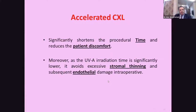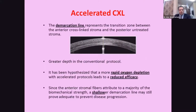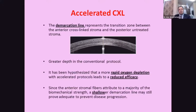Accelerated cross-linking significantly shortens procedure time and reduces patient discomfort. The ultraviolet irradiation time is significantly lower. It avoids excessive corneal thinning and subsequent endothelial damage intraoperatively or postoperatively. However, patients who have had accelerated cross-linking have a shallower demarcation line. The demarcation line represents the transitional zone between the anterior cross-linked stroma and the posterior untreated stroma. In this technique, there is less efficiency compared to the standard protocol.